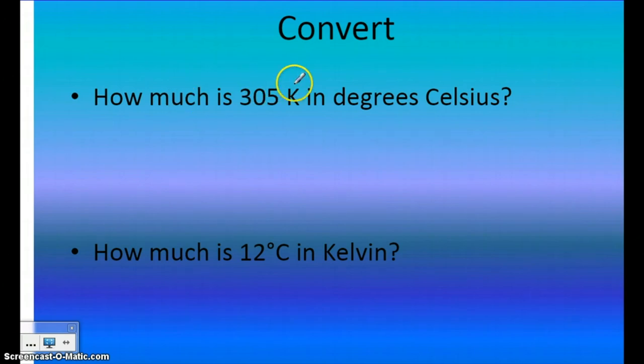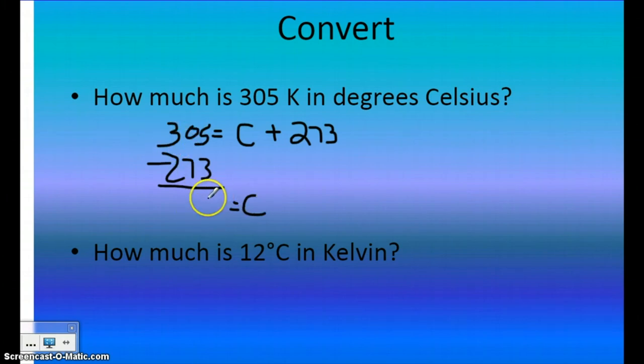So in this one, it says how much is 305 Kelvin in degrees Celsius. So we know that if it is Kelvin, we're going to put it in the K spot. So, 305 equals C plus 273. And then we would subtract 273 from both sides. And that would tell us that in degrees Celsius, the sample is 32 degrees Celsius.